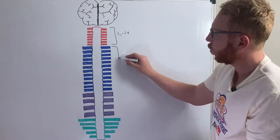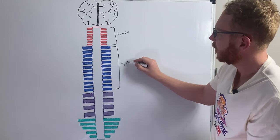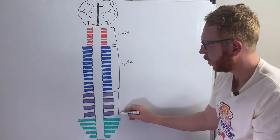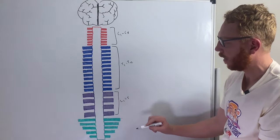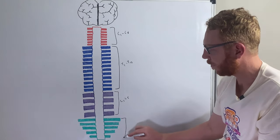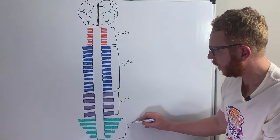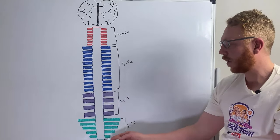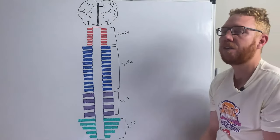The next level we have 12 thoracic, so we call this T1 to T12. Next we have the lumbar region which is L1 to L5, so there's five levels here, and then finally we finish off with the sacral and there's five of those, so we call it S1 to S5. Today I've left out the coccygeal which also has one, but essentially this gives you the 31 levels of the spinal cord.